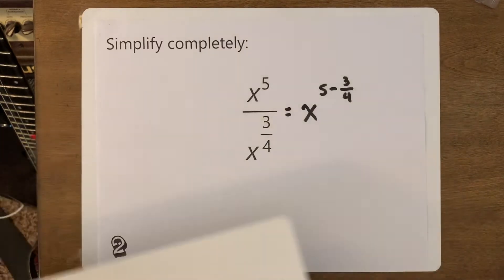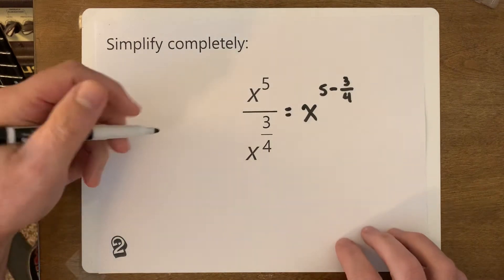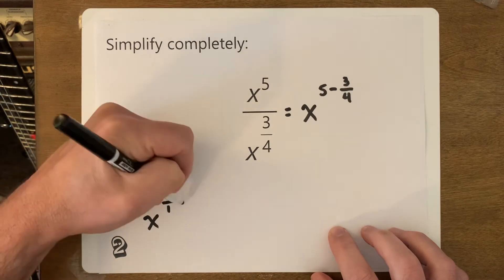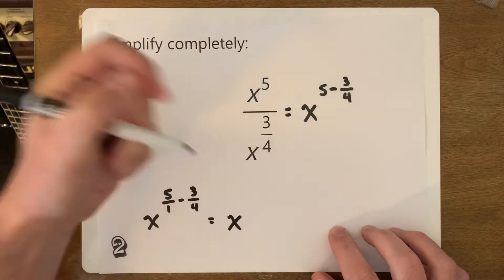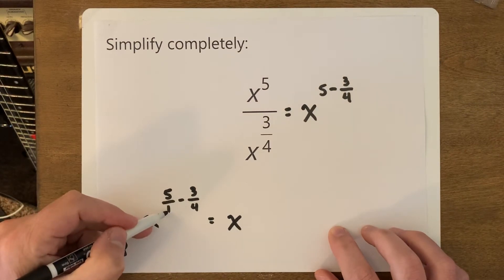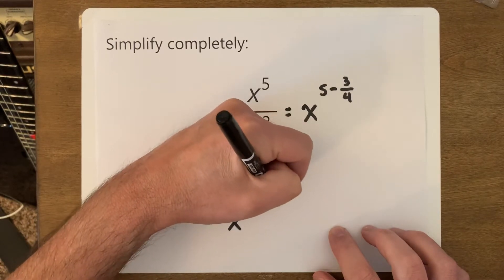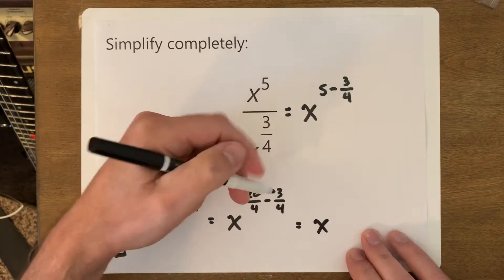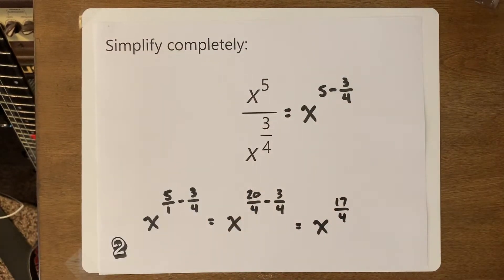So for our problem, five minus three-fourths — we'll rename them. The common denominator is four, so 20 over four minus three over four. That gives x to the 20 take away three, which is 17 over four. So our answer is x to the 17 over 4, and there's nothing more you can do with it.